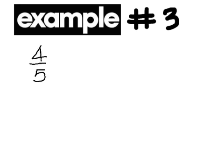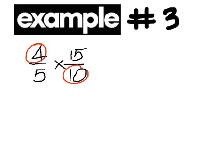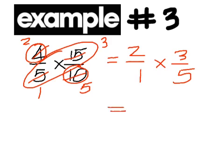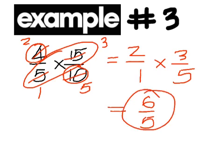Example 3 is 4 over 5 times 15 over 10. Before you multiply, see if you can cross-cancel anything. 4 and 10 — the highest number that goes into both is 2. 2 goes into 4 twice and into 10 five times. Then go the other way: 5 into itself once and into 15 three times. So what you really have is 2 over 1 times 3 over 5. Multiply left to right to get 6 over 5.